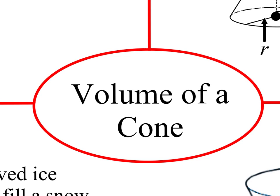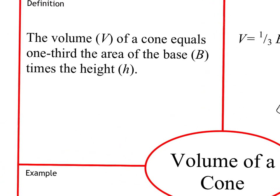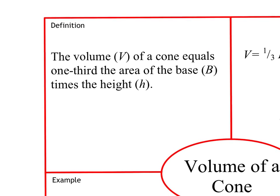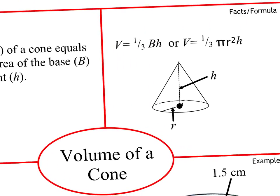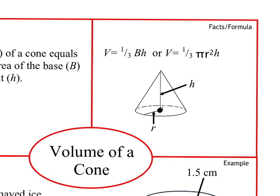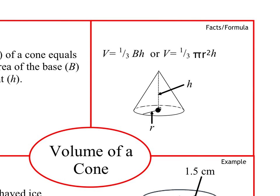This video is on volume of a cone and volume of a pyramid. The volume of a cone is essentially the same thing as the volume of a cylinder, except you're multiplying that by one-third. So it's going to be one-third the base times the height, or volume equals one-third pi r squared times the height.